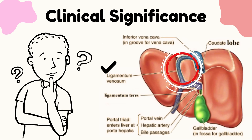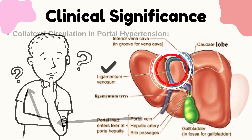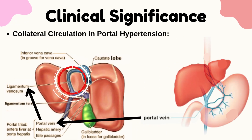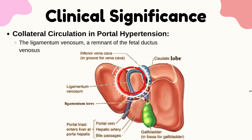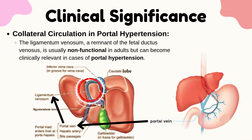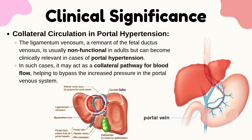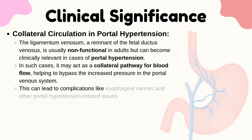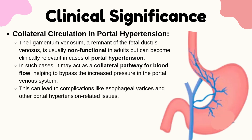Regarding clinical significance: collateral circulation in portal hypertension. The Ligamentum Venosum, a remnant of the fetal ductus venosus, is usually non-functional in adults, but can become clinically relevant in cases of portal hypertension. In such cases, it may act as a collateral pathway for blood flow, helping to bypass the increased pressure in the portal venous system. This can lead to complications like esophageal varices and other portal hypertension-related issues.